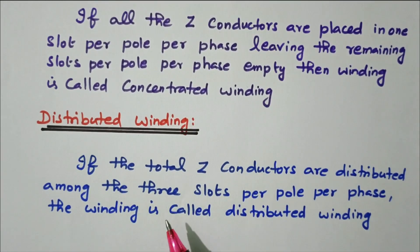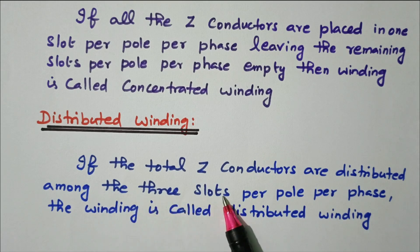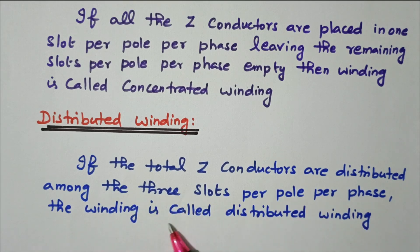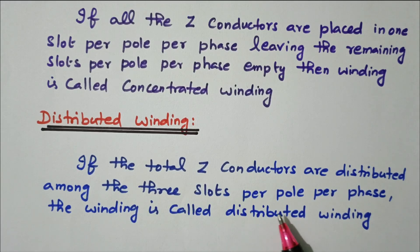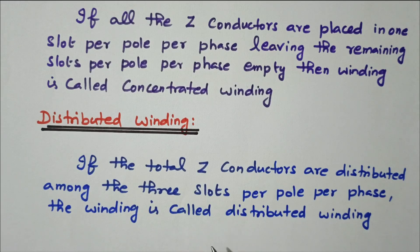In distributed winding, if the total z conductors are distributed among all three slots per pole per phase, then the winding is called distributed winding. In the earlier case only one slot was used; now the conductors are placed equally in all three slots — so it is called distributed winding.